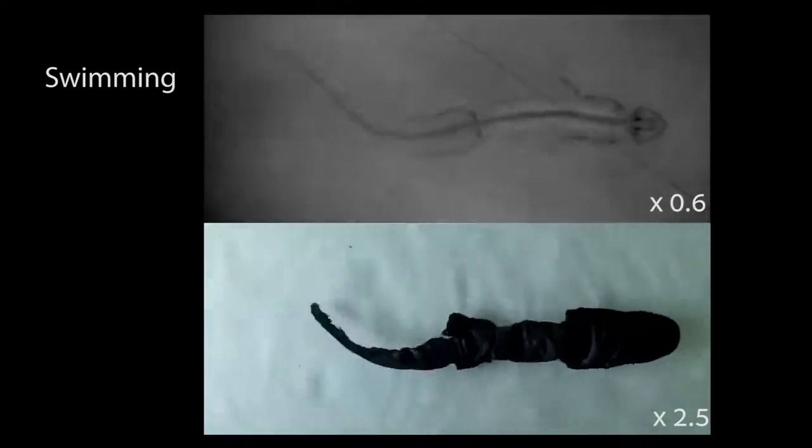We designed a salamander robot that very closely mimics the real motion of the salamander. It can both walk and swim exactly like the real animal.